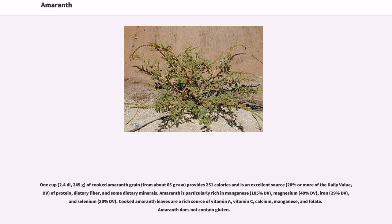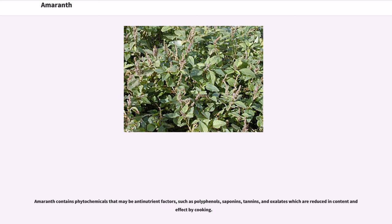Cooked Amaranth leaves are a rich source of vitamin A, vitamin C, calcium, manganese, and folate. Amaranth does not contain gluten. Amaranth contains phytochemicals that may be anti-nutrient factors, such as polyphenols, saponins, tannins, and oxalates, which are reduced in content and effect by cooking.